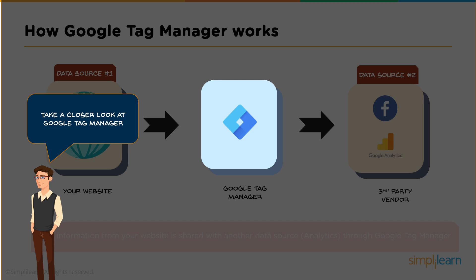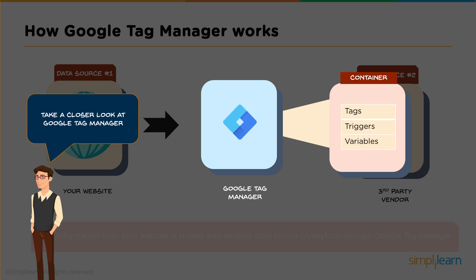Let's take a deeper dive into how Tag Manager works. When you have a Tag Manager account, you have a container — think of it as that toy box holding all your tracking code from different platforms like Facebook. The way Tag Manager works is through three core components: tags, triggers, and variables.